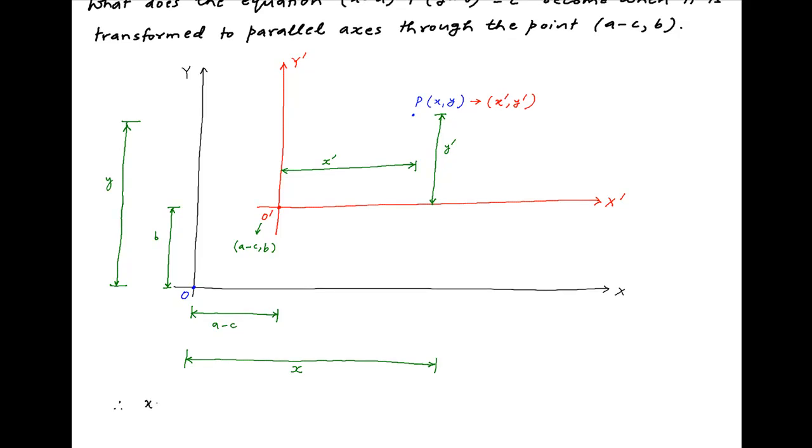Looking at the horizontal distances, we note that X is equal to A-C plus X', and Y is equal to B plus Y'.